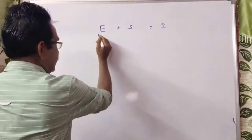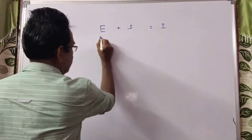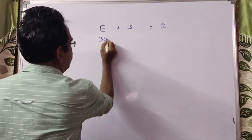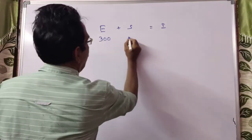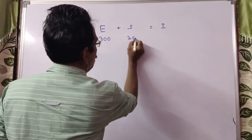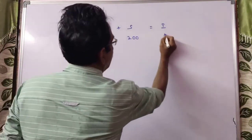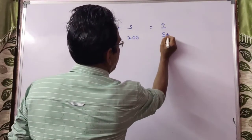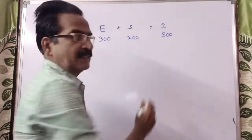Say expenditure is 300 and savings is 200, then total income becomes 500.